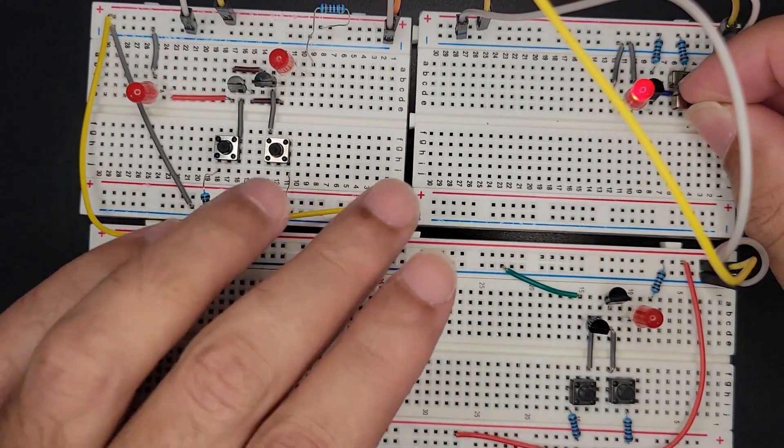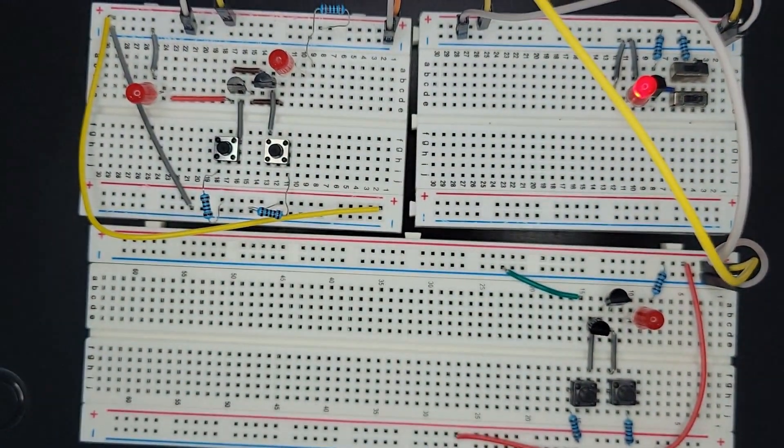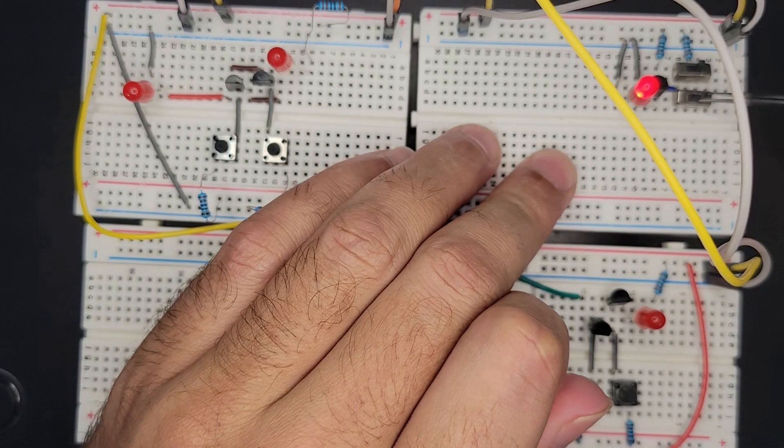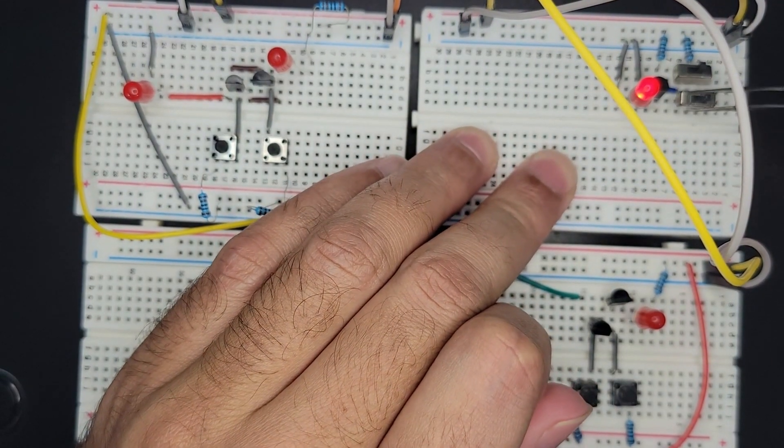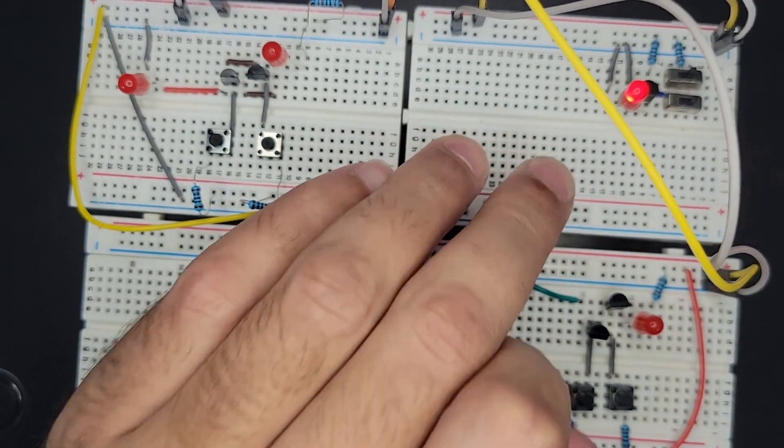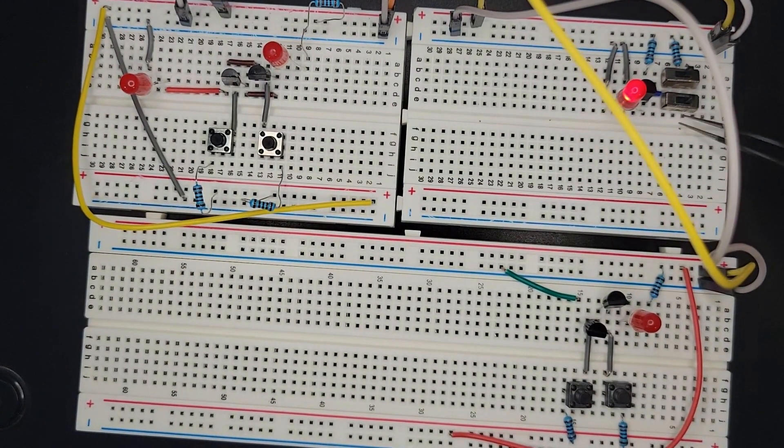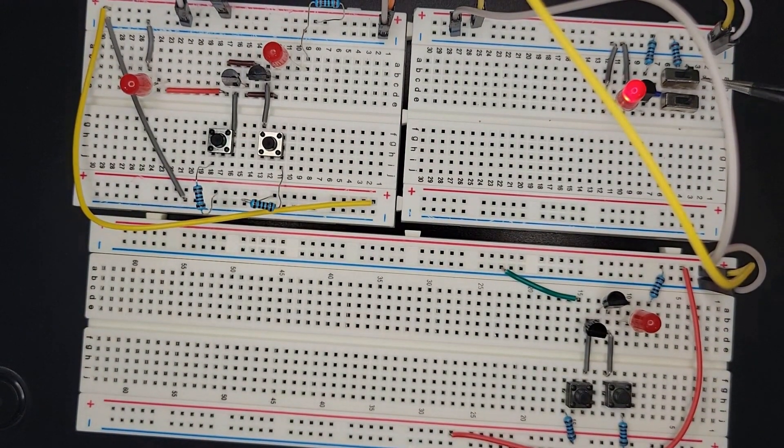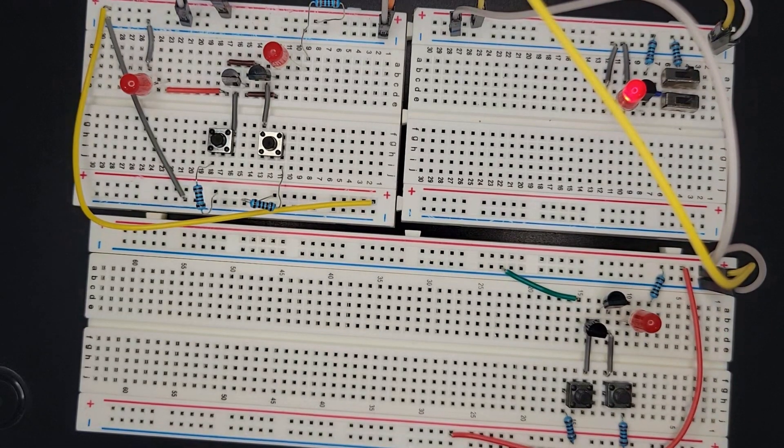I'm pretty much going to model the inverter, because remember the inverter becomes a NOR gate by just adding another input. So I'm going to model this but then just change the connections between the buttons and hopefully that should suffice.